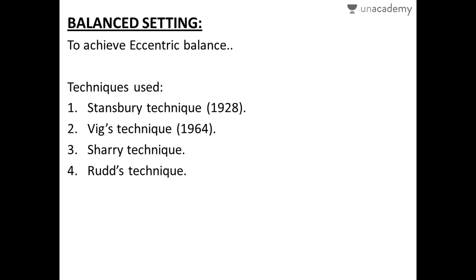Balanced setting is important to achieve eccentric balance. Four techniques are used: number one, the Stansbury technique (1928); number two, the Wicks technique (1964); number three, Sherry's technique; and number four, Roots technique. In the Stansbury technique — the first functional chewing technique — the maxillary or mandibular occlusal rim of the arch to be prosthetized is trimmed buccally and lingually so that the occlusion is free in lateral movements, then carding wax is added.